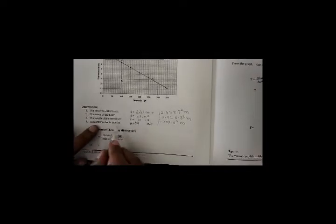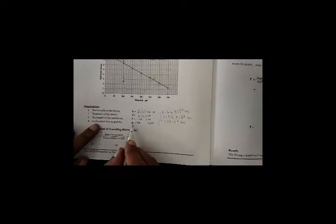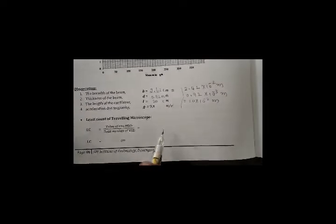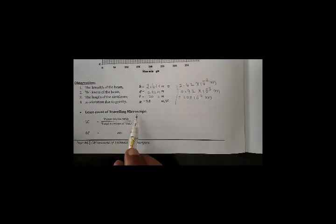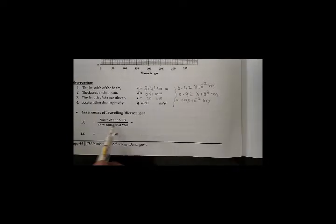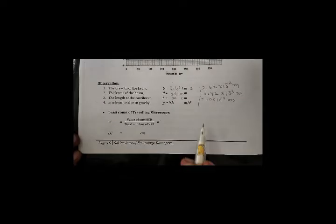The acceleration due to gravity is constant: g = 9.8 m/s². To find the depression, we use the traveling microscope, which has a least count that can be measured using the formula: LC = value of 1 MSD divided by total number of VSDs.